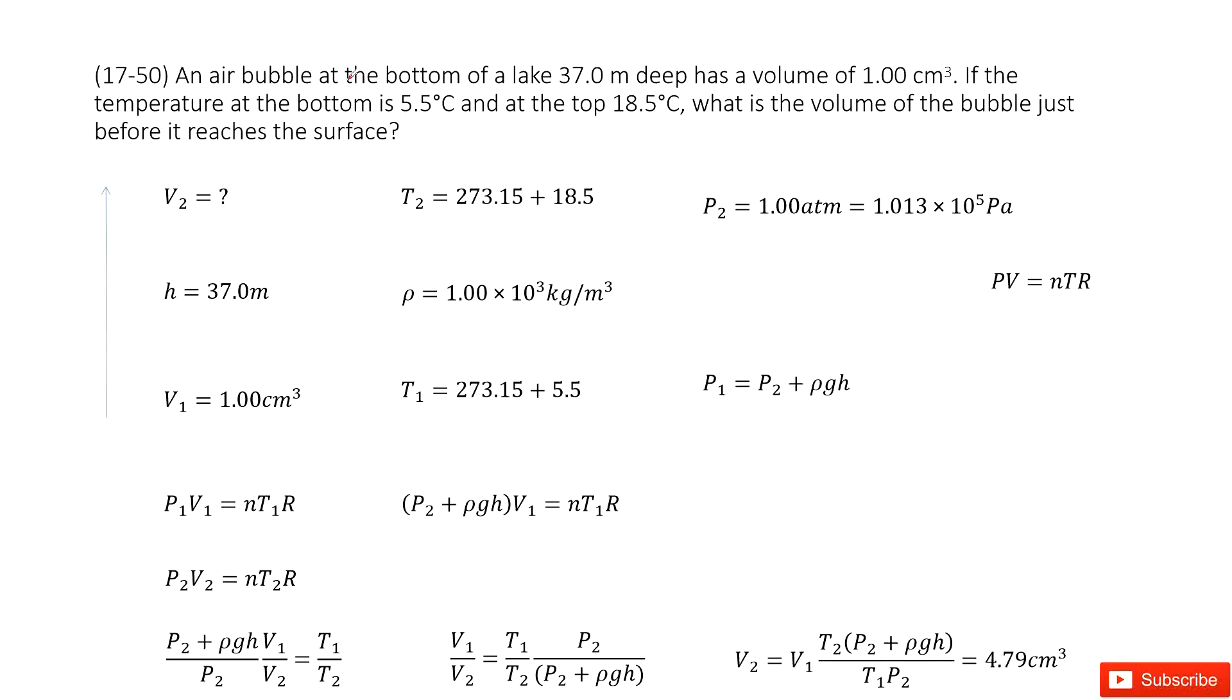We have an air bubble at the bottom of the lake. The volume is given as V1, and the temperature T1 is given as 5.5 degrees Celsius. We must convert it into Kelvin, so we add this constant to convert it into Kelvin.